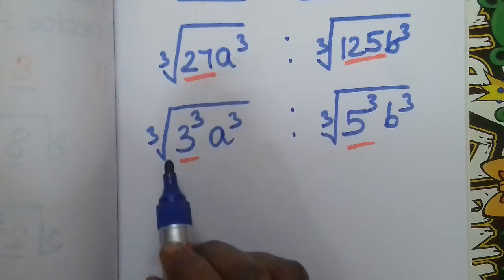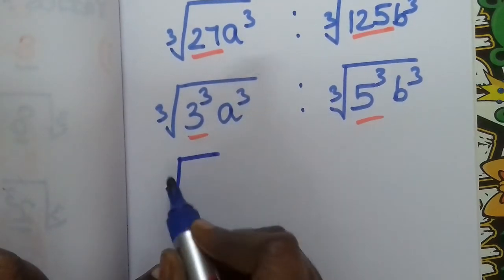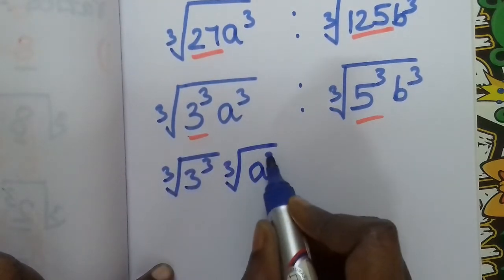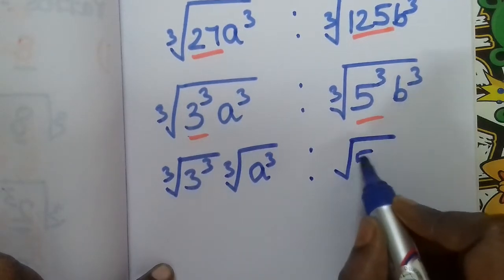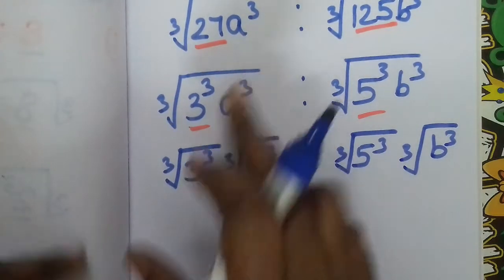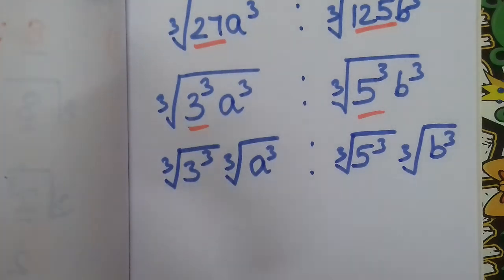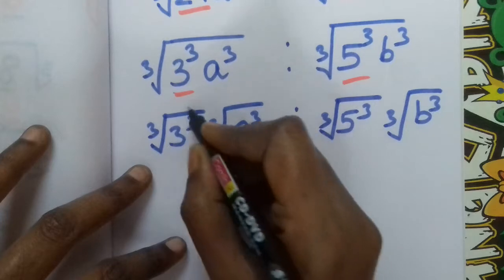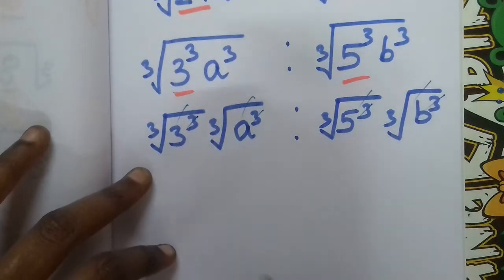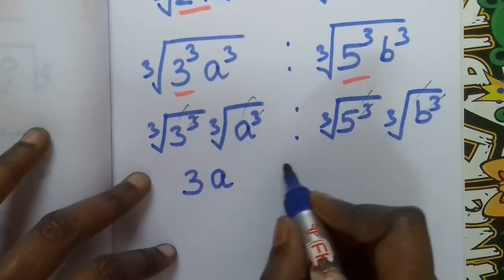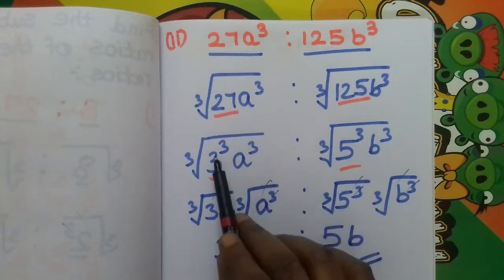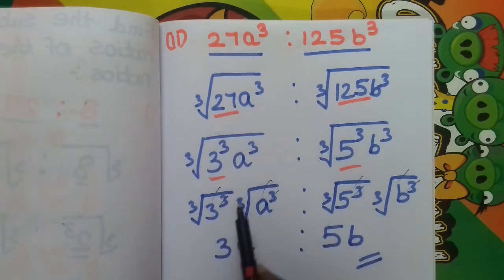The cube root is applicable to both the number and the variable parts. So we split: cube root of 3 cubed times a cubed is to cube root of 5 cubed times b cubed. The cube root cancels out with the cube, so this step lets us cancel it. The cube is applicable to both terms, giving us the simplified answer.